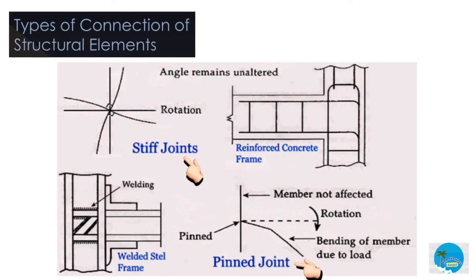These are the types of connection of structural elements. Stiff joints are considered rigid or fixed at the point of connection. Pin joints are hinged joints that allow relative movements of the elements and cannot resist bending moments, making them movable.